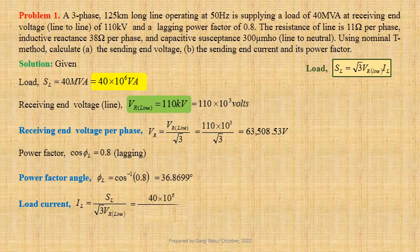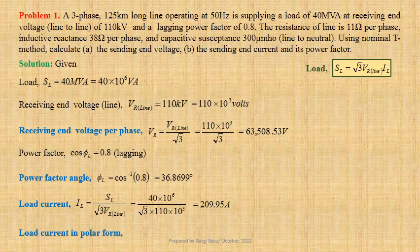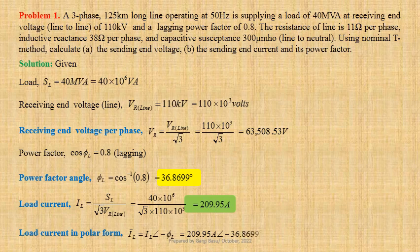The load current IL equals 40×10⁶ divided by root 3 into 110×10³, which gives us 209.95 ampere. The load current may be written in polar form as IL at an angle minus φL, that is equal to 209.95 ampere at an angle minus 36.8699 degrees.